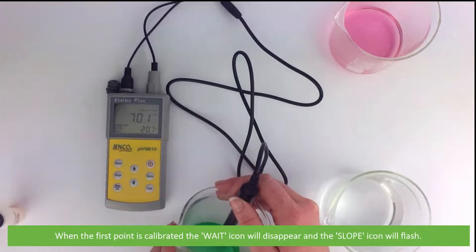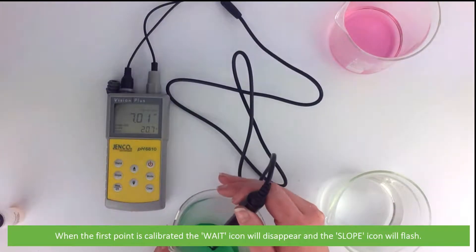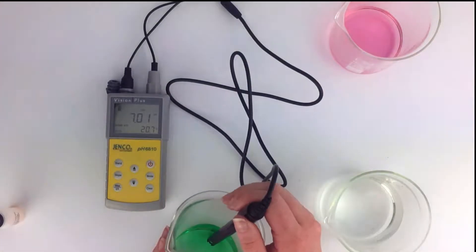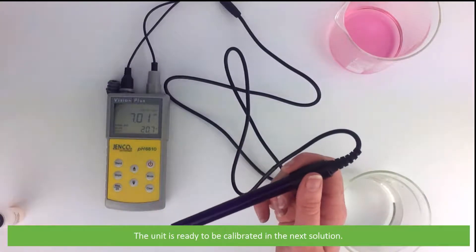When the first point is calibrated, the wait icon will disappear and the slope icon will flash. The unit is now ready to be calibrated with the next solution.